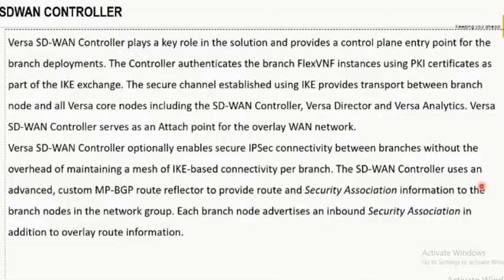At any point in time, this is so secure that your Director and Analytics do not directly talk to the branch location. The controller maintains the tunnel and BGP to the edge appliance. All traffic always comes to the controller before reaching the Director or Analytics. In this way, we reduce exposure and protect our network and the data collected from the customer's network.